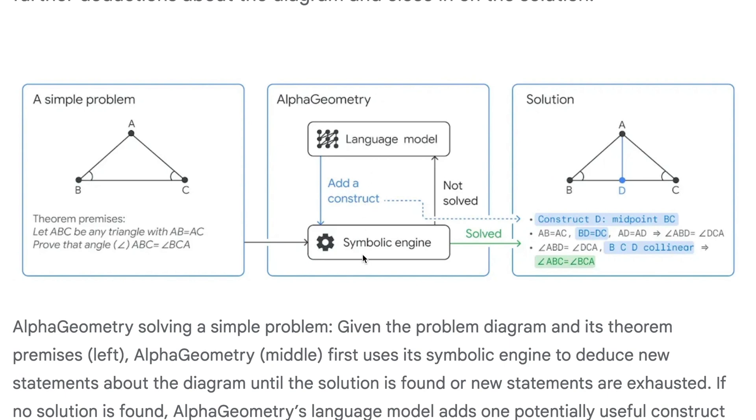But the innovation is when the symbolic engine cannot solve this problem, it is not solved. It goes into this large language model, and that creates a magic construct. They also call it the rabbit. I'll go into the video and show you what exactly this means. So when you add this construct, it goes back into the symbolic engine. That should push it forward, and maybe it will solve it. If not, you repeat this process until you solve the problem.